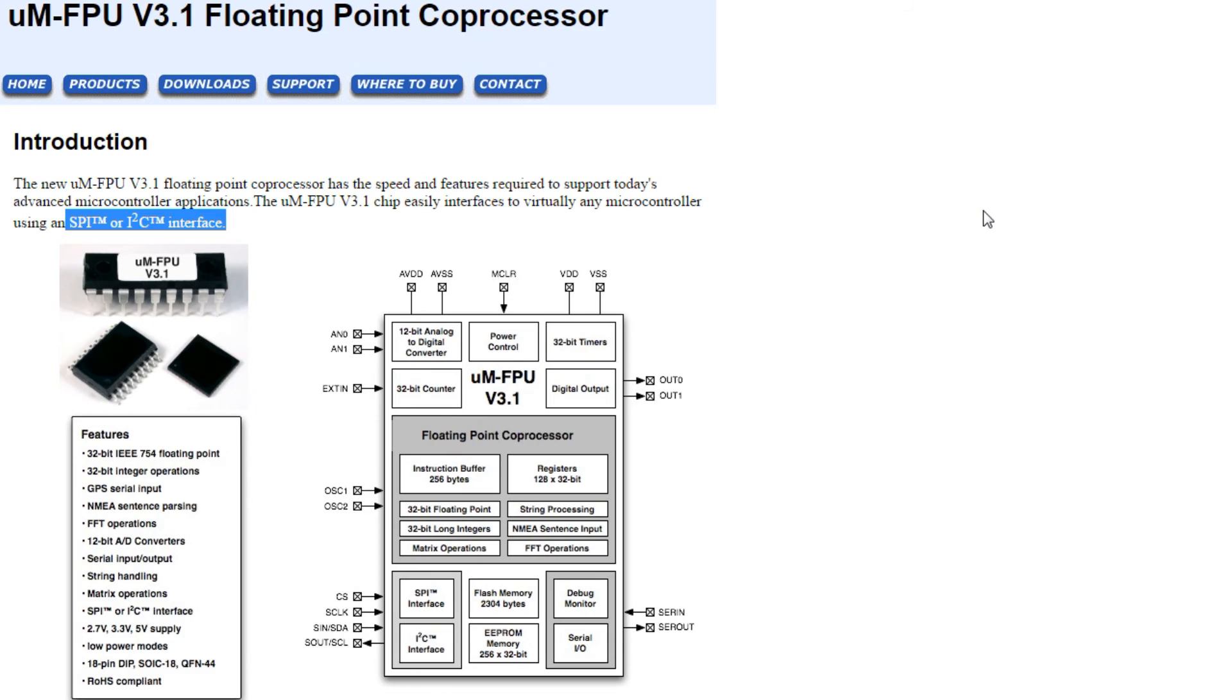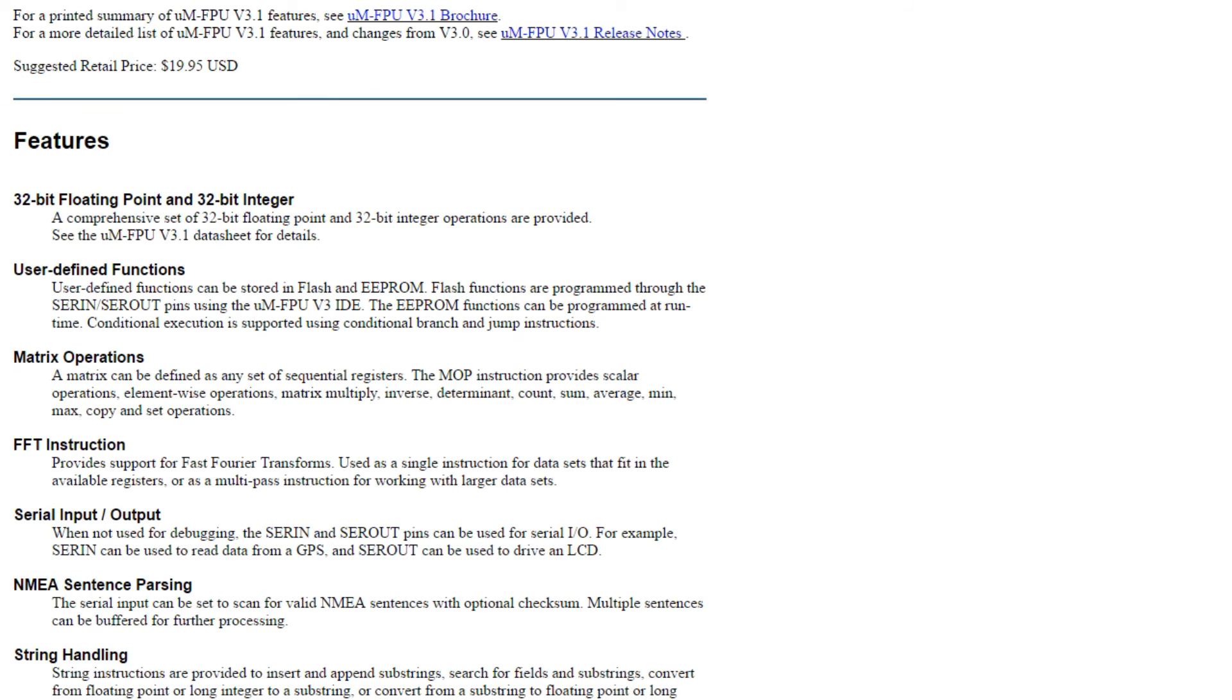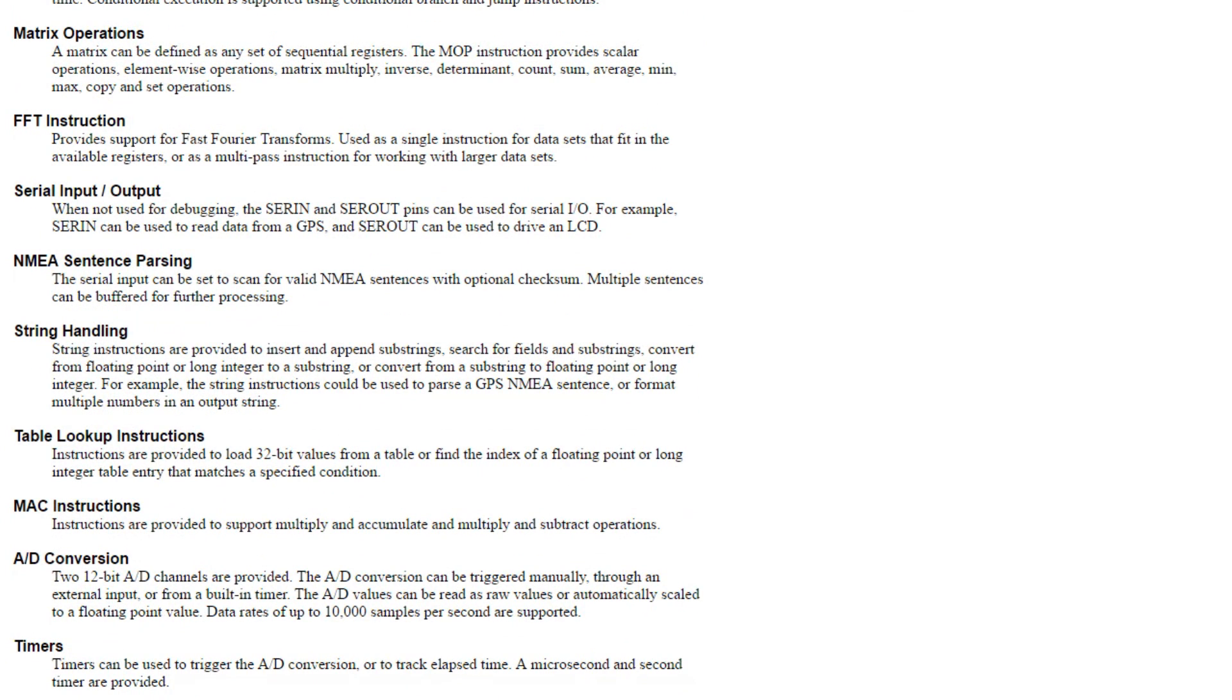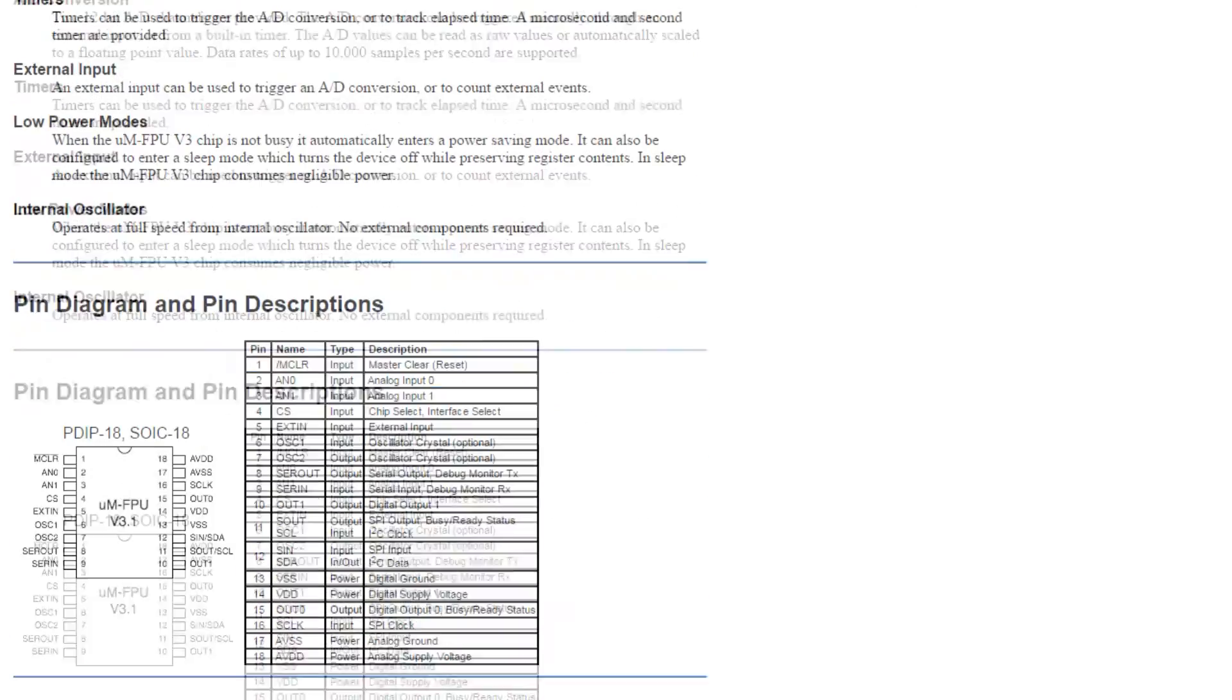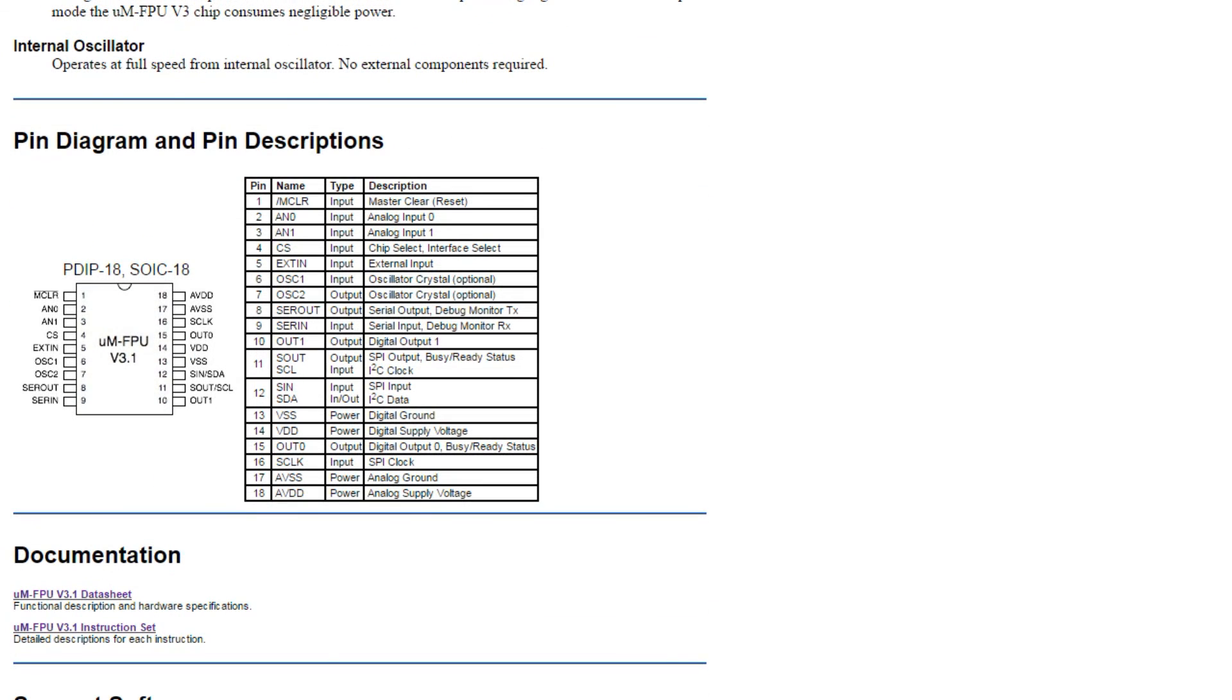So when you have a math problem you could send it up to this math coprocessor and it won't interfere with your Arduino programming. It won't slow it down at all. Then when you need the answer you just download it from the chip. Now this chip does a lot more than math. If you look down at the features, it does fast Fourier transforms. It has a serial port so you could feed a GPS into the serial port and it will parse out the NMEA strings so you could parse out the latitude and longitude. It's got an A-to-D converter. It's got some timers. It's got an internal oscillator. Now this chip costs around $20, so it's a bit pricey, but in the long run it could save you a lot of headaches.